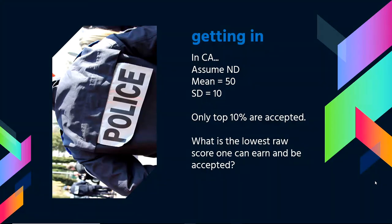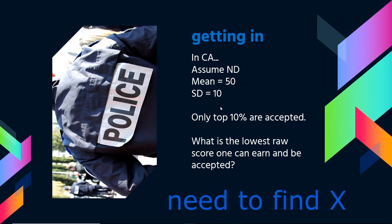Here's one more practice problem I'll leave for you. Imagine a friend trying to get into a police academy in California. The academy requires a test that is normally distributed with a mean of 50 and a standard deviation of 10. Only the top 10% of applicants are accepted. It doesn't help your friend to tell him the Z-score he needs; he needs to know the raw number of points on the test he has to score.